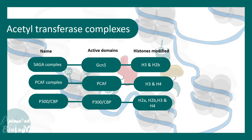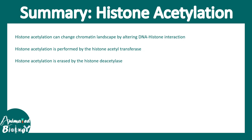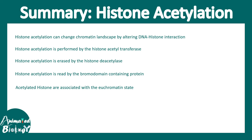In summary, histone acetylation can change the chromatin landscape by altering the DNA-histone interaction. Histone acetyltransferases are the writers; histone deacetylases are the erasers; and bromodomain-containing proteins are the readers. Acetylated histones are associated with the euchromatin state, and acetylation at different histone residues has different outcomes in terms of the chromatin landscape.